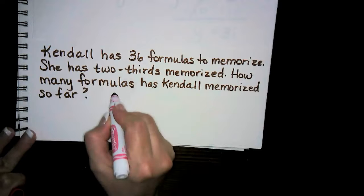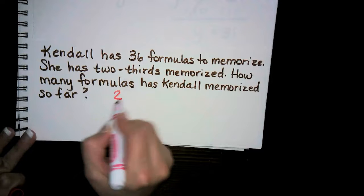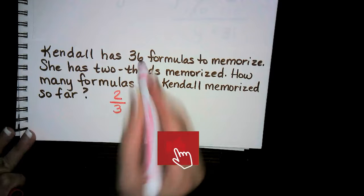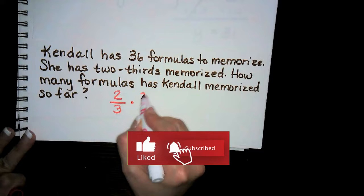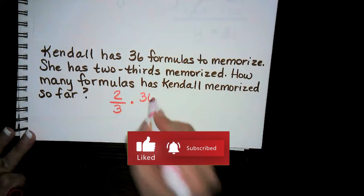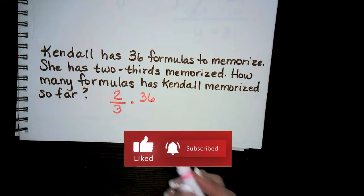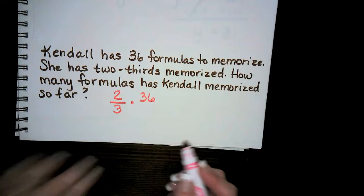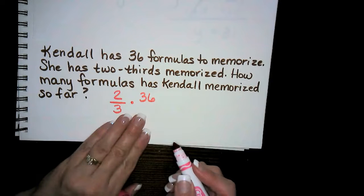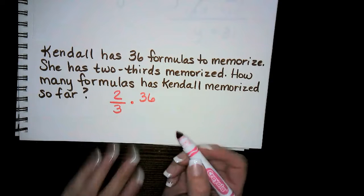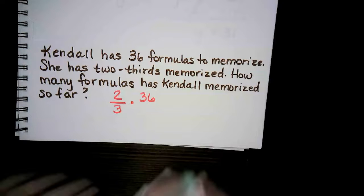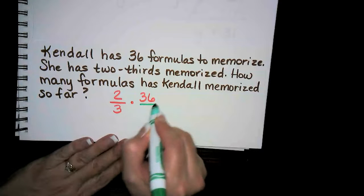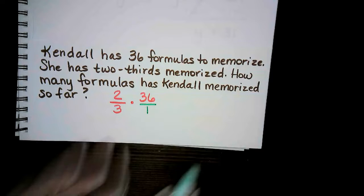We're going to take the two-thirds and write it as a fraction, then multiply it times the 36. You may be thinking, how am I going to multiply a fraction times a whole number? One of the easiest ways is to write the whole number over one.